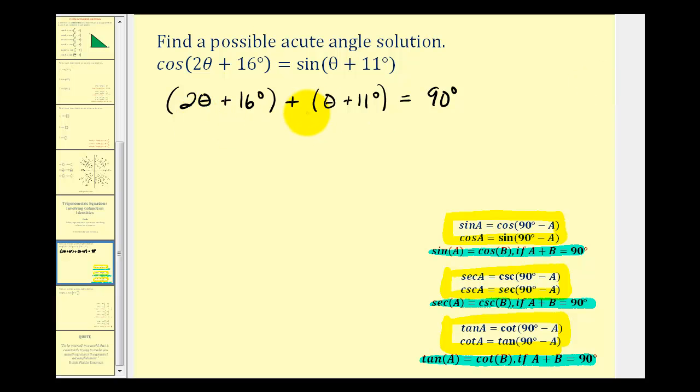So now we'll go ahead and solve this by first combining like terms and then solving for theta. So we have two theta plus one theta, that's three theta. And then we have 16 degrees plus 11 degrees, that's 27 degrees. And this sum must equal 90 degrees.